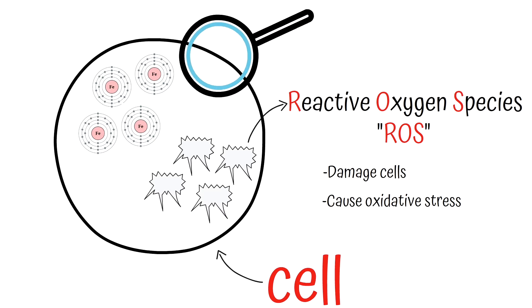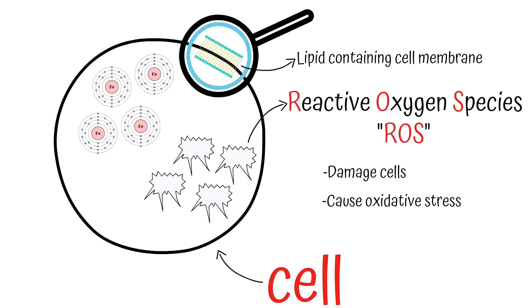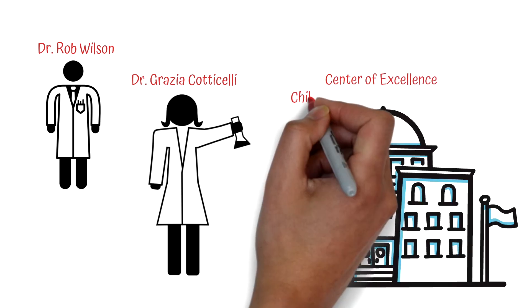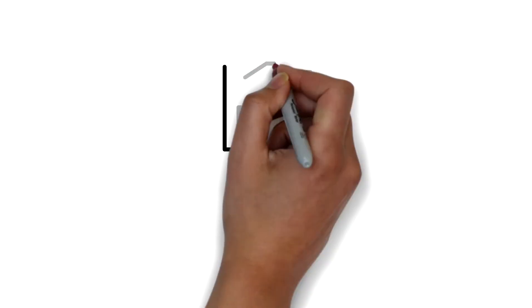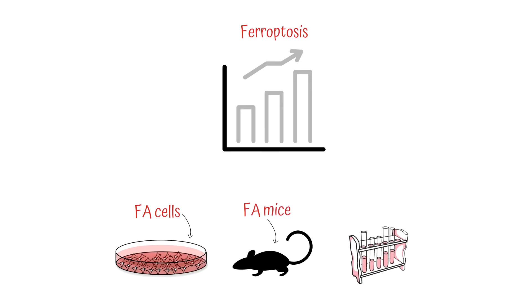One of the hallmarks of ferroptosis is the damage to the fat lipid-containing membranes that surround cells. This damage is called lipid peroxidation. Rob Wilson, Grazia Coticelli, and their colleagues at the Center of Excellence at Children's Hospital of Philadelphia, with collaborators at the University of Pittsburgh, have documented ferroptosis in cells from FA patients.